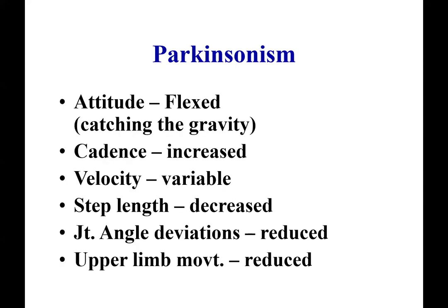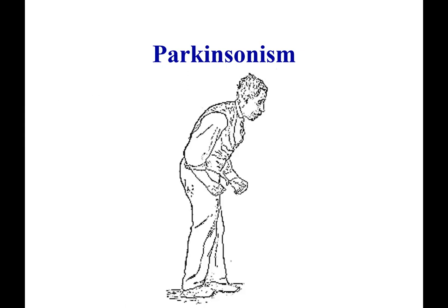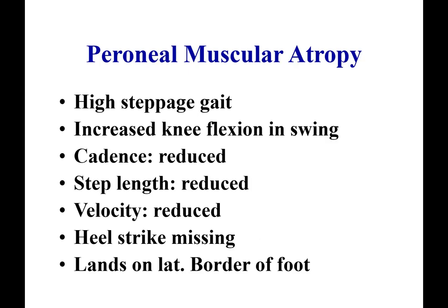In Parkinsonism, the person has a flexed attitude when standing. There is freezing at the time of starting, and once they start, they tend to fall forward — as if trying to catch gravity. Cadence is increased, velocity is variable, and step length is significantly reduced. Joint angle deviations are very reduced, and upper limb movements are also reduced, resulting in a shuffling gait. Patients with Parkinsonism stand and walk with very short steps, shuffling their feet to catch their balance, as if about to fall.